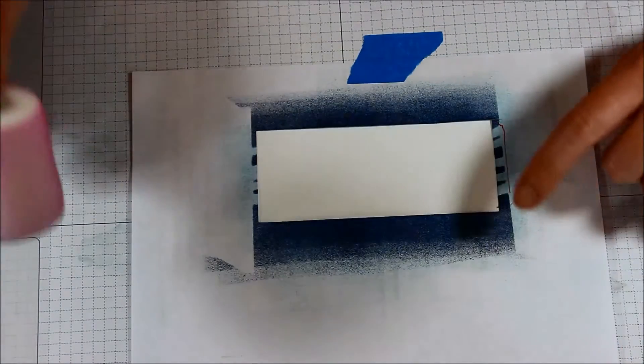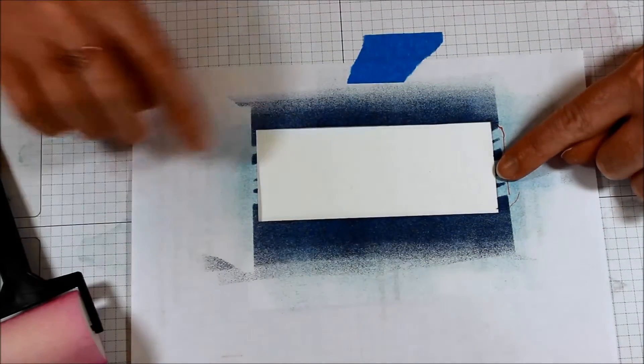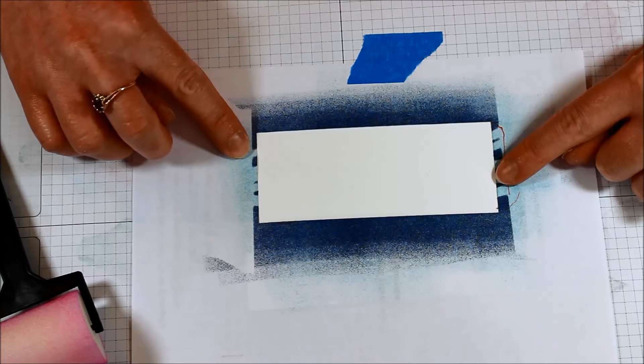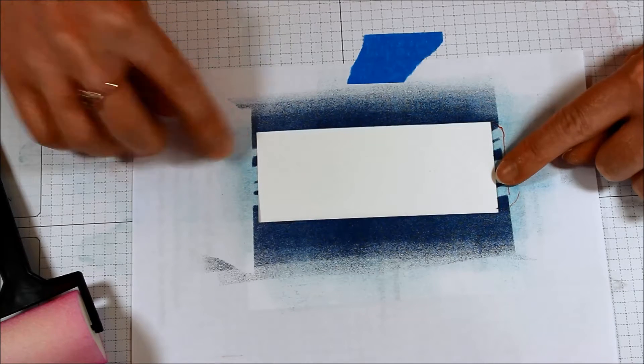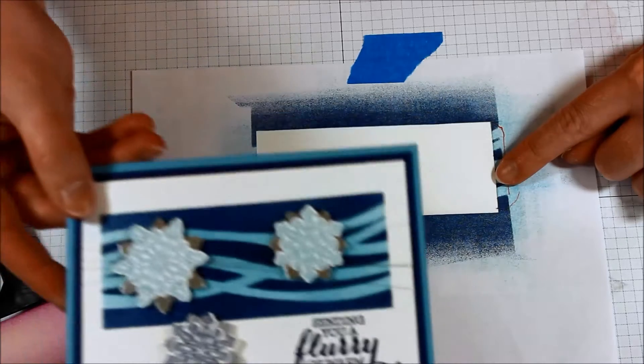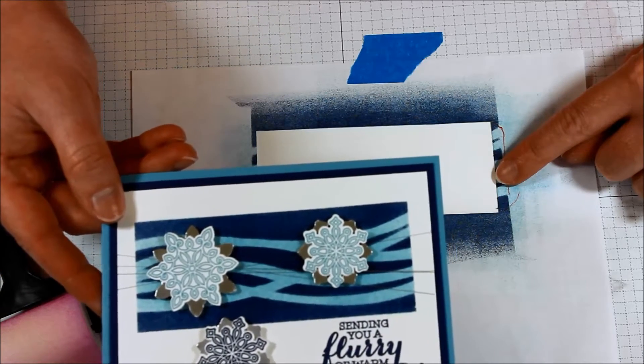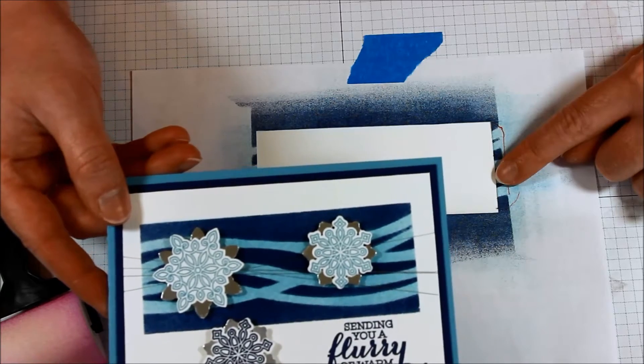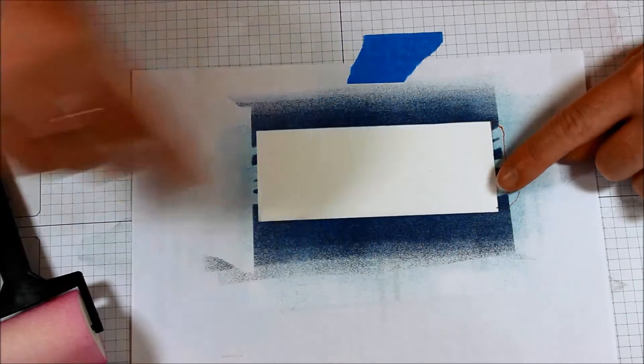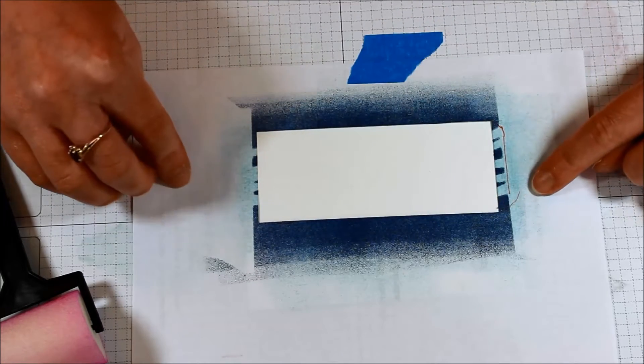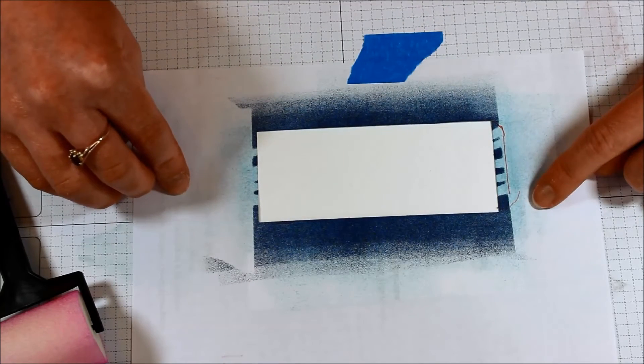So here let's bring in our grid paper. Here we have our grid paper and I have a piece of Whisper White cardstock underneath this mask and it measures three and three quarters by five because I layered it onto Night of Navy that measured four by five and a quarter and then on a Marina Mist card base.